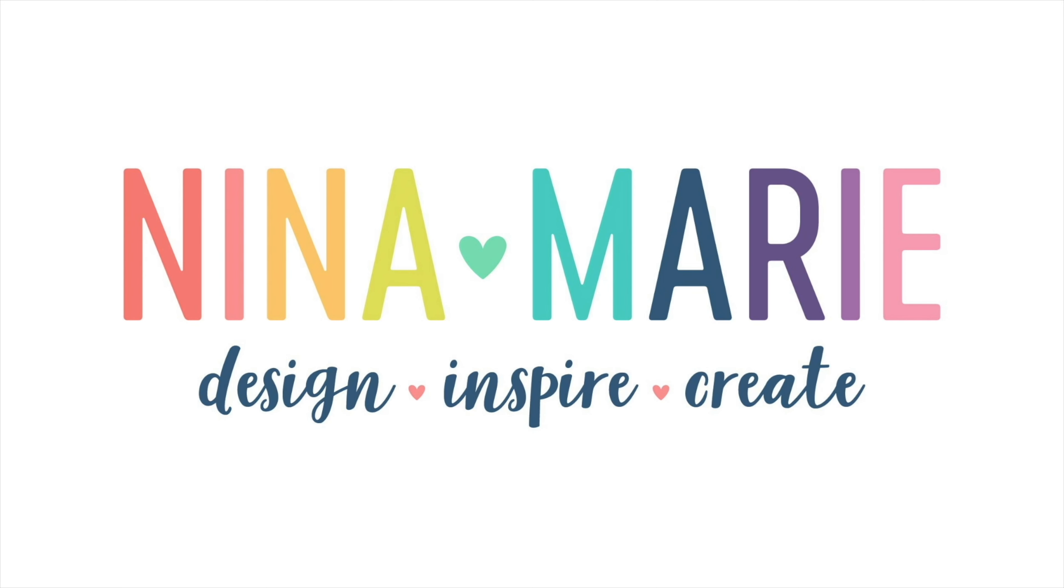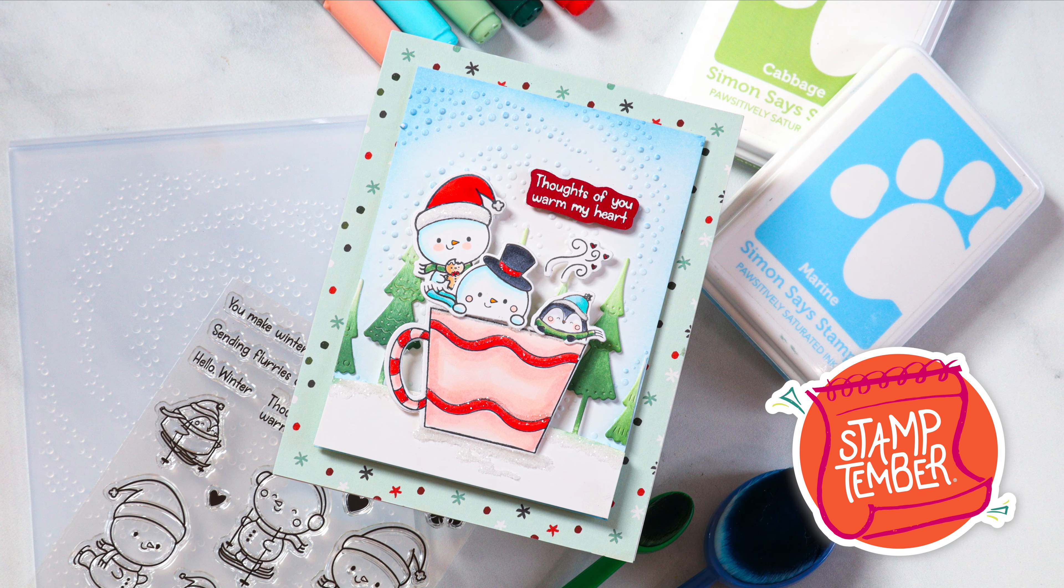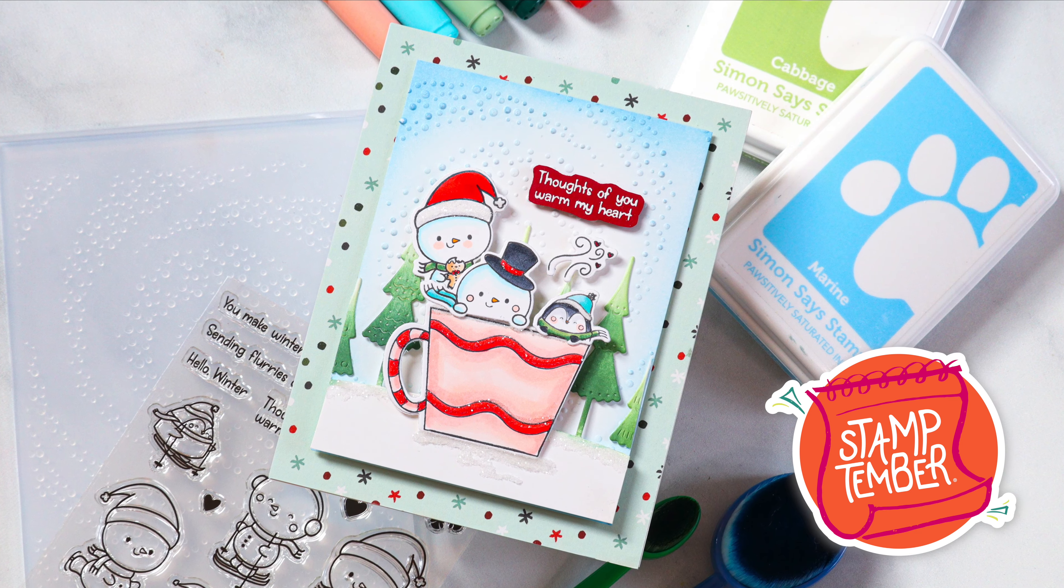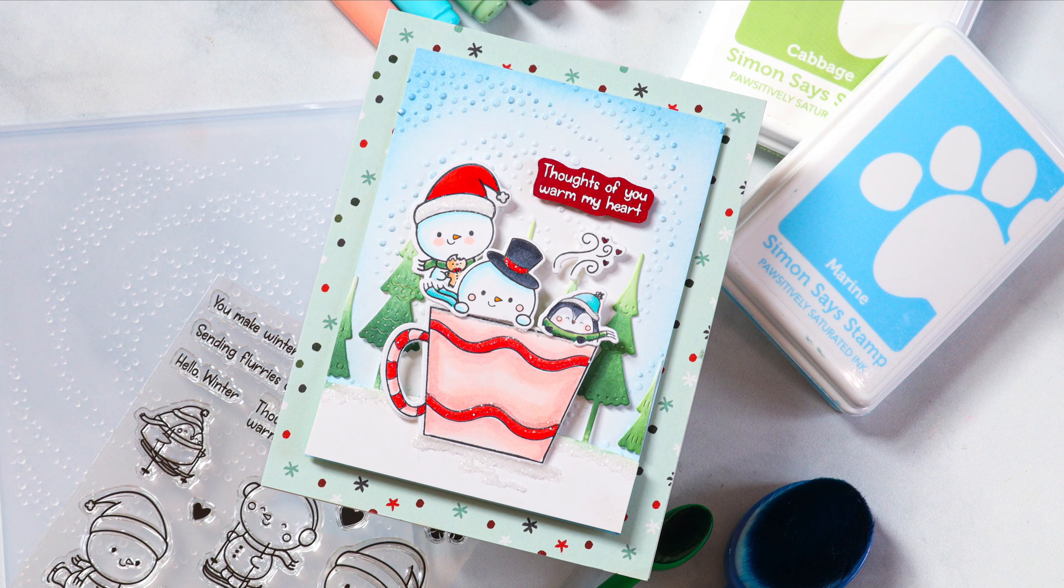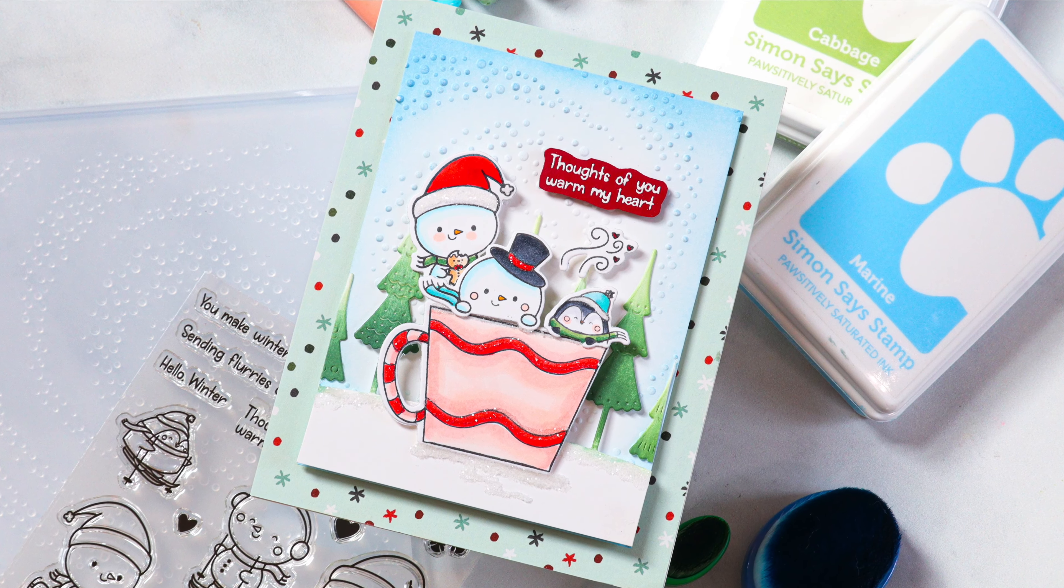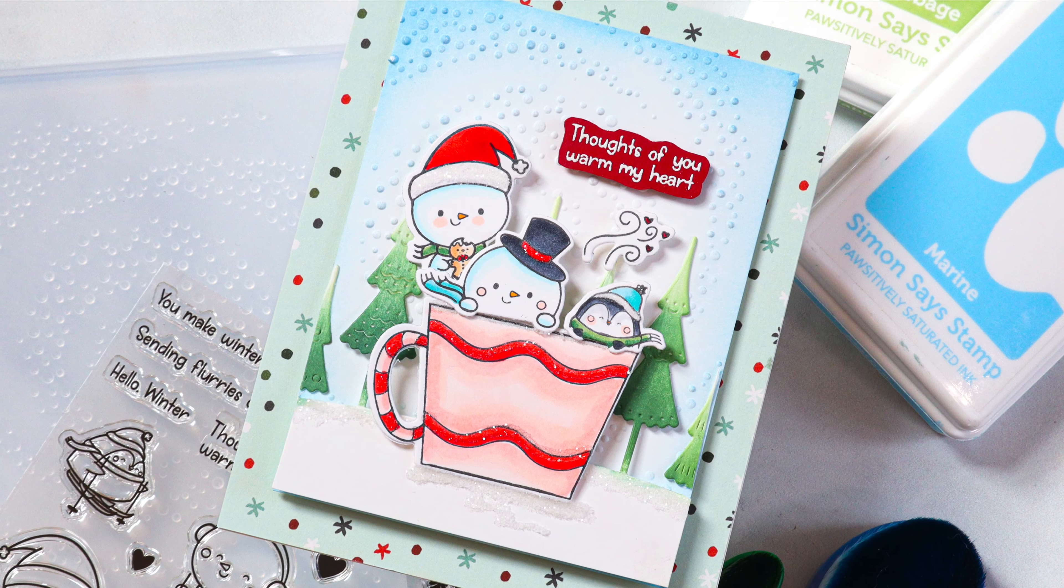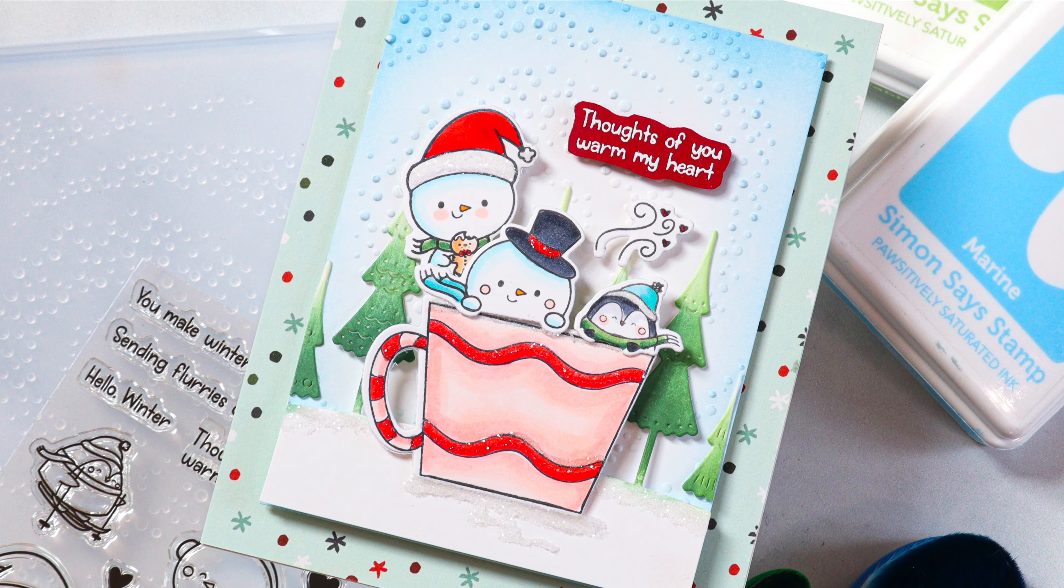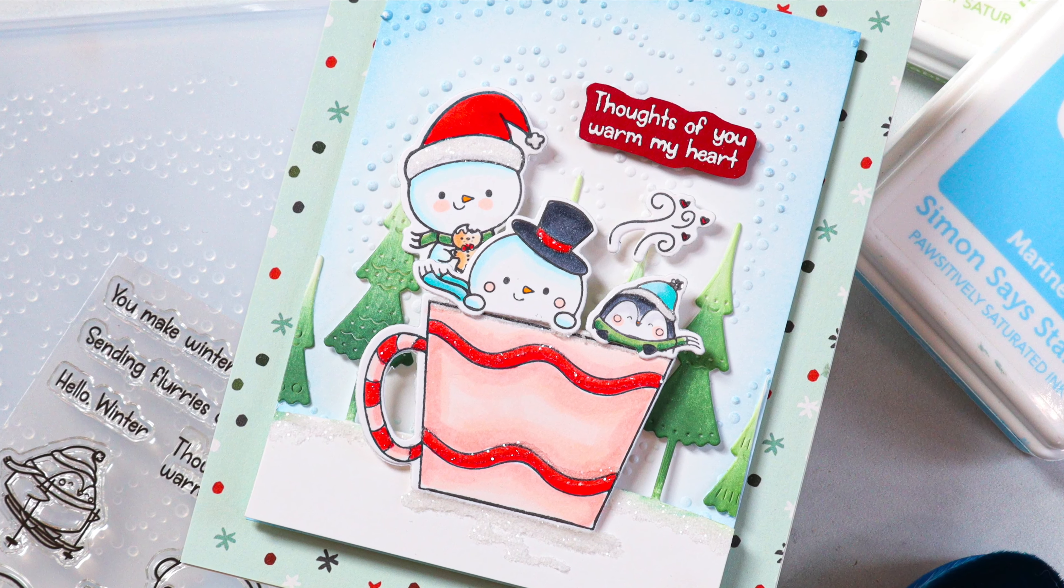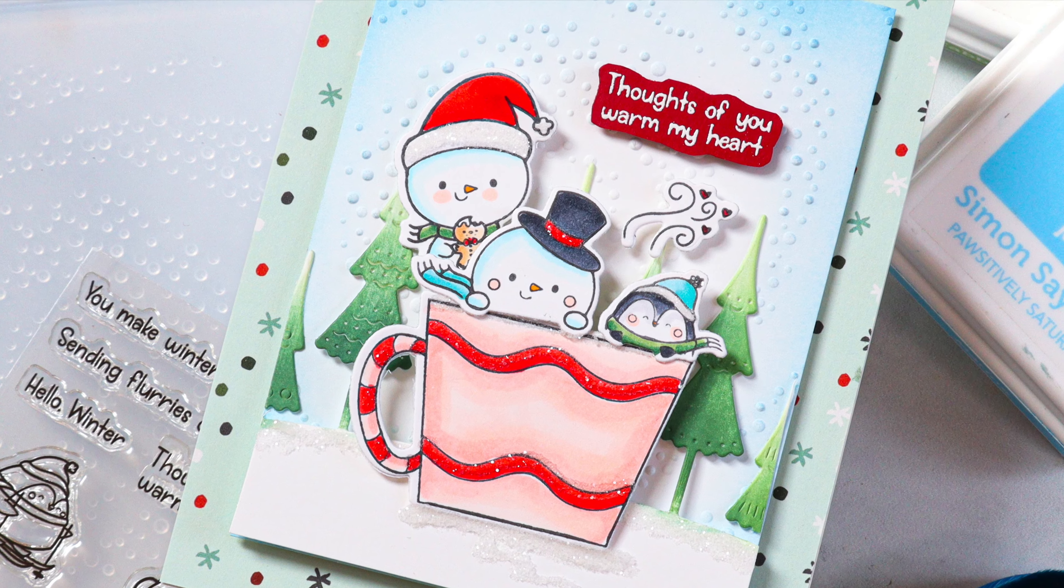Hey there everyone, it's Nina. Thanks for joining me today for a new video. Today I am showcasing the brand new and super adorable Stamp Timber collaboration set with Pink and Main and Simon Says Stamp. This cutie is called Flurries of Love. I just adore the little snowman and the penguin and the cute little coffee mug that you could fill with the little critters.